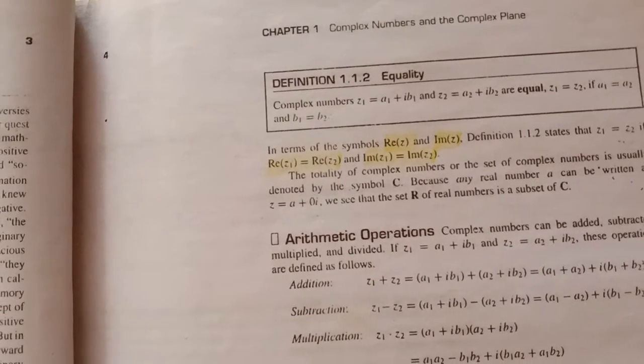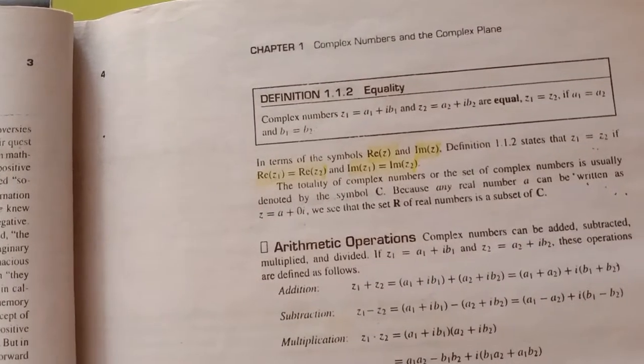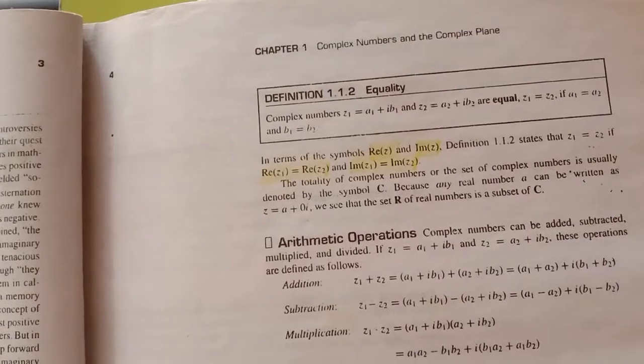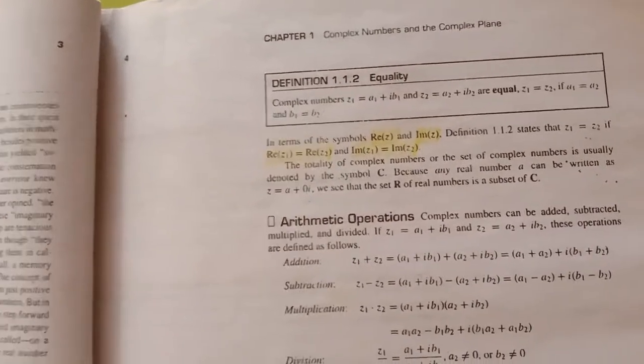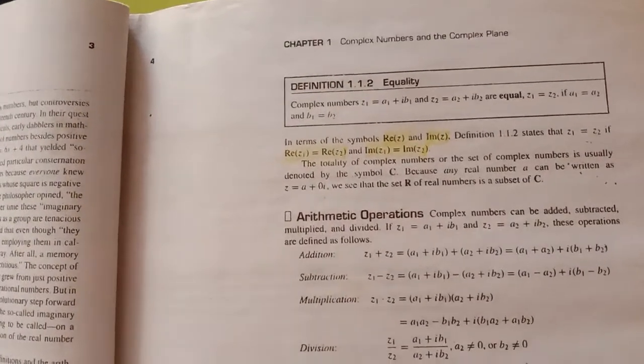z1 is equal to a1 plus iota b1 and z2 is equal to a2 plus iota b2 are equal means z1 and z2 are equal if a1 equal to a2 and b1 equal to b2.